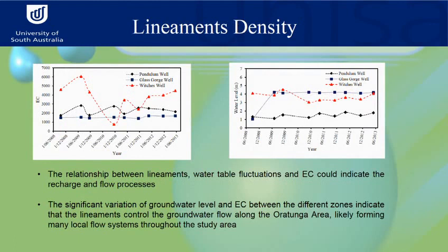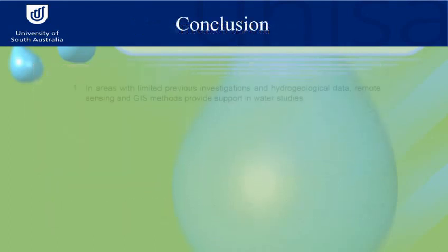We also examined the temporal relationship to linear features, using water level and EC data over three years. The relationship between lineaments, water table fluctuation, and EC indicates a good recharge and flow process. This significant variation of water level and EC between different zones indicates that lineaments control the groundwater flow along the study area, likely forming many local flow systems through the study area.